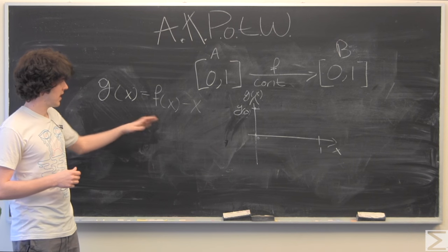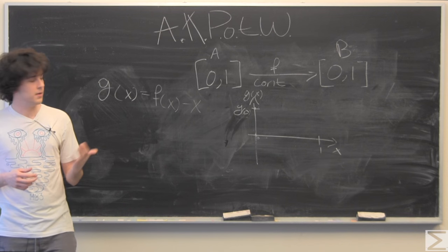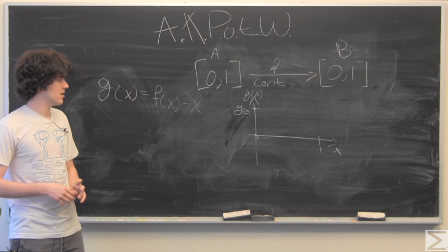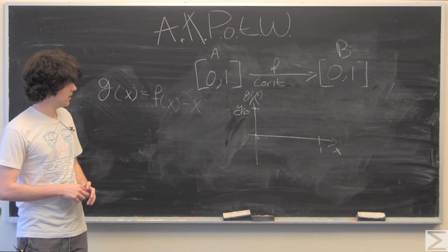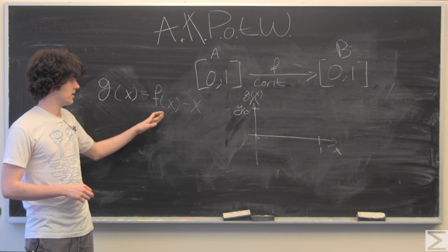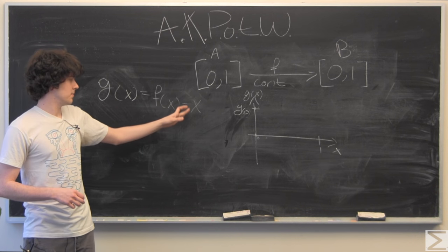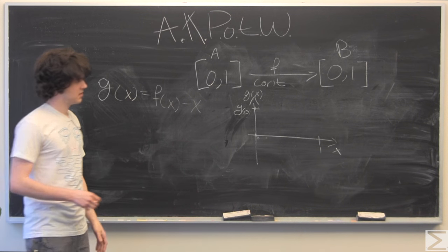So for x equals one, again, if f of x equals one, our job is done. However, if f of x does not equal one, remember it can be between zero and one. So we're going to be subtracting something less than one and then minus one, which is going to be negative.